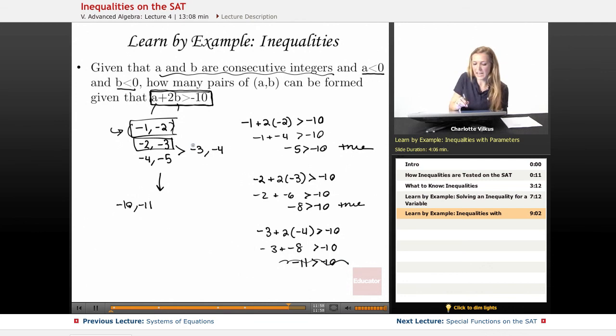So this is not true. And this pair no longer meets the bounds that I've been given. So I only have two pairs of A and B, and that would be the answer here is 2.